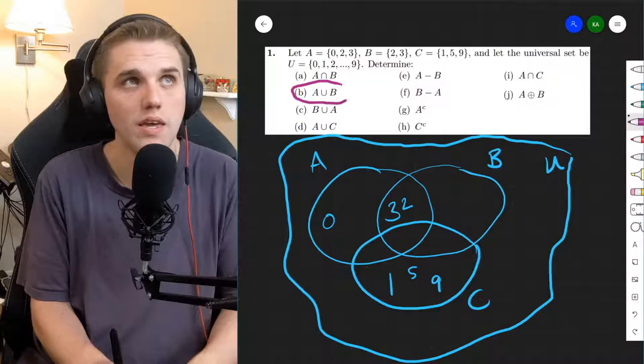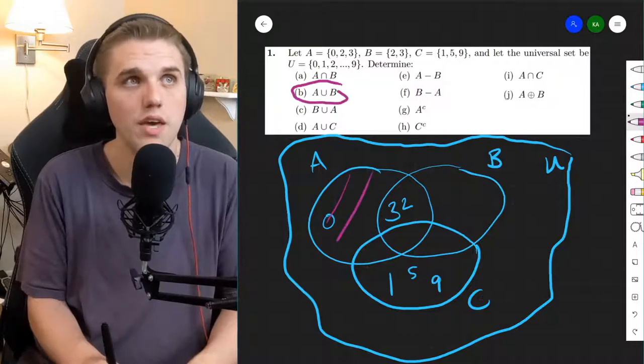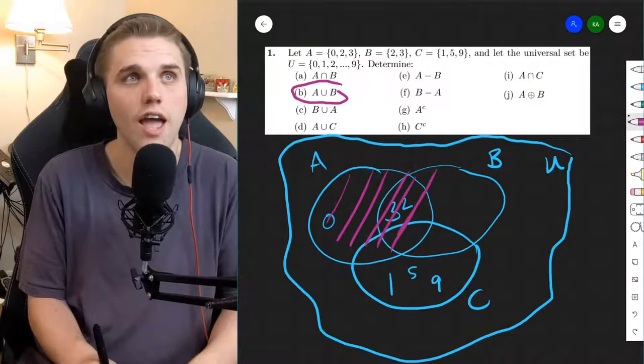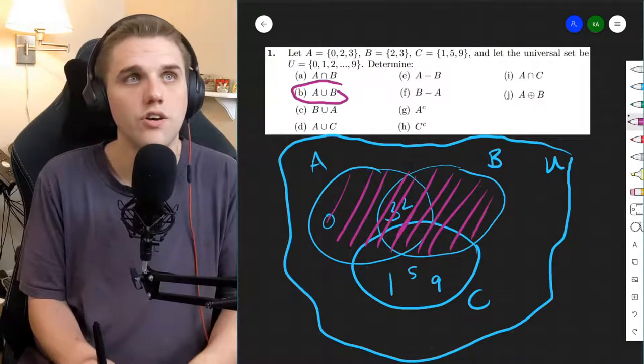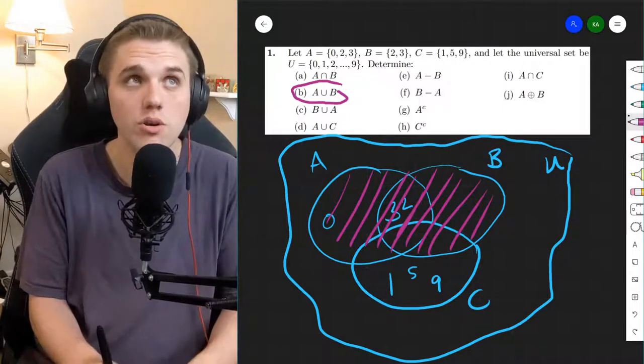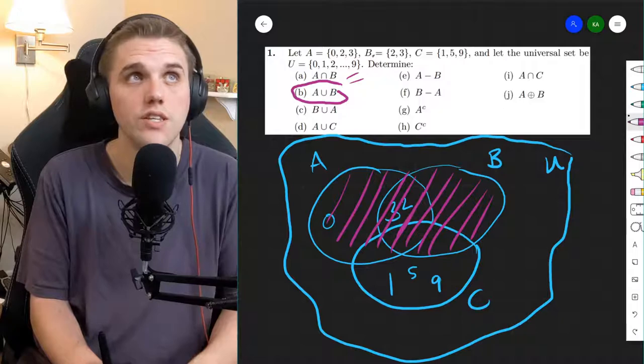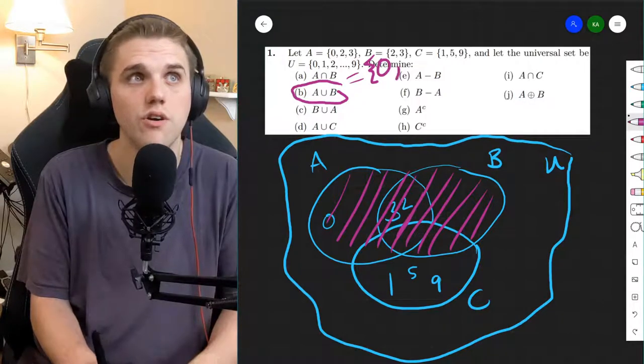All right, let's do part B. A union B. This is everything in either A or B. So still 2 and 3, but also 0 now. So this is the set containing 0, 2, and 3.